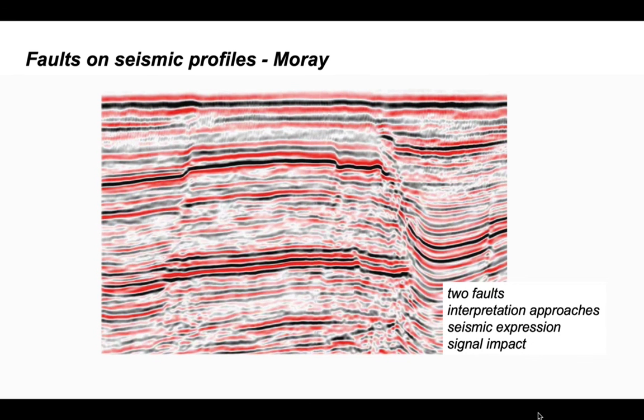So a quick look at two faults that we've interpreted from the Inner Moray Firth. We've looked at interpretation approaches of using the good reflector correlations to determine the overall sense of movement, and then use those moving systematically reflector to reflector as we move down through the section. We can trace the fault zones down through the profile in this way. We've seen that the quality of the seismic image is degraded approaching the fault zones, and this is a common problem in interpreting structures in seismic profiles.